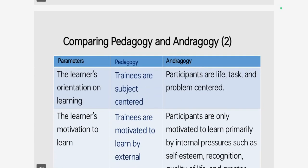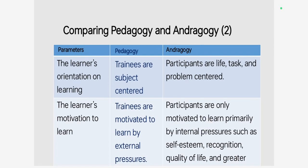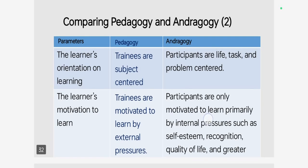Still comparing pedagogy and andragogy, based on the adult learning principles and characteristics of adult learners. Those who understand these principles can understand this comparison clearly. Regarding learners' orientation on learning, in pedagogy trainings are subject-centered, and learners are motivated to learn by external factors. But in andragogy, as we have already said, motivation comes from both external and internal sources.